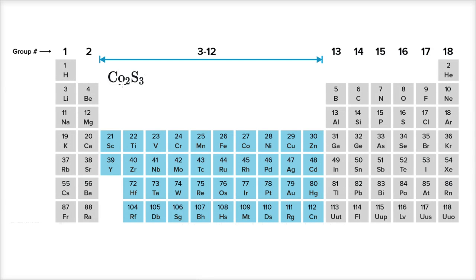So we have the formula for an ionic compound here. And the goal of this video is what do we call this thing? It clearly involves some cobalt and some sulfur, but how would we name it?